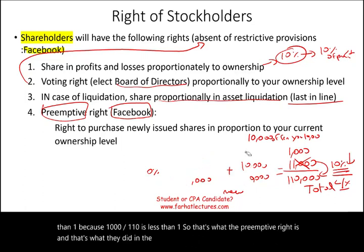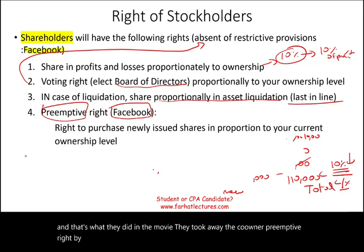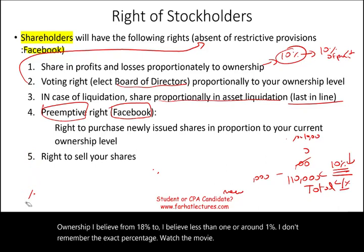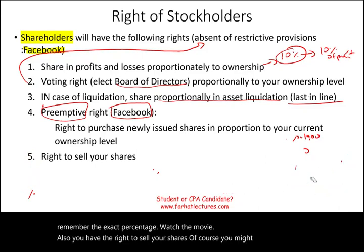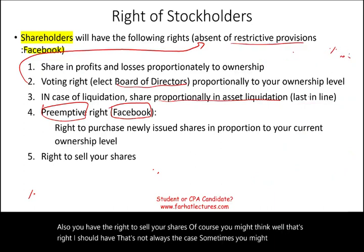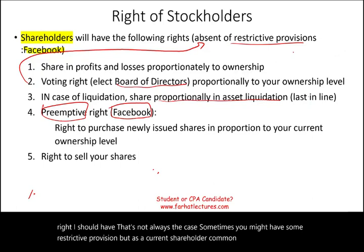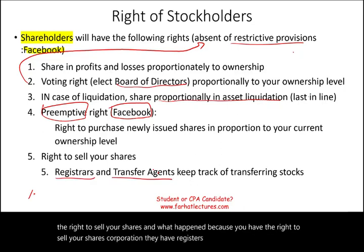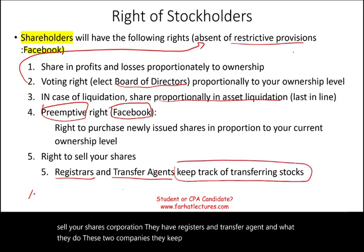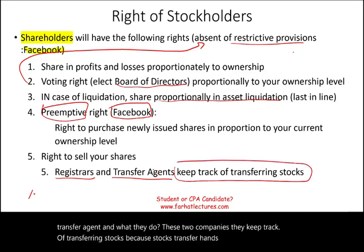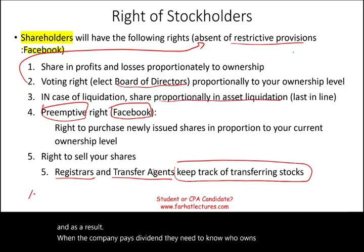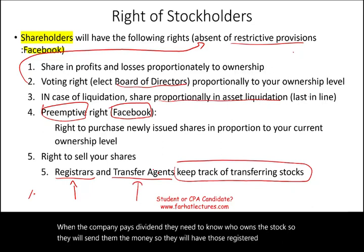That's exactly what happened in the movie Social Network: they took away the co-owner's preemptive right by issuing new shares and dropped his ownership from around 18% to less than 1%. Also, you have the right to sell your shares, though there may be restrictive provisions. Because stocks transfer hands daily, corporations have registrars and transfer agents that keep track of stock transfers. When the company pays dividends, they need to know who owns the stock so they can send them the money.